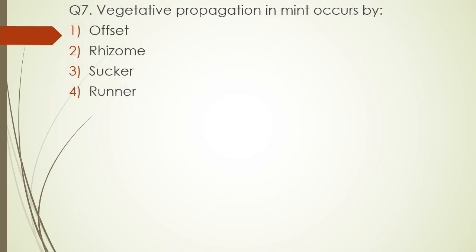Question number seven. The vegetative propagation in mint occurs by: offset, rhizome, sucker, or runner? The correct answer is option three — sucker.